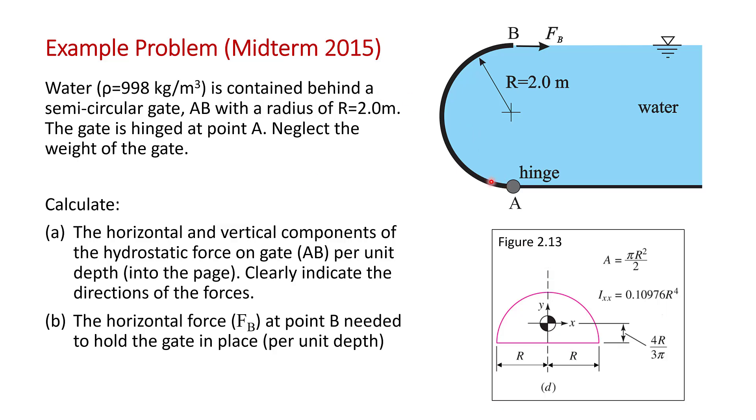Here's our gate AB and it's hinged at A. We're going to neglect the weight of the gate and just calculate the forces based on the hydrostatic forces. In part A, we need to calculate the horizontal and vertical components of the hydrostatic force on gate AB. We're going to assume unit depth into the page and clearly indicate the direction of the forces. That's worth quite a bit on a midterm because it indicates that you understand the problem.